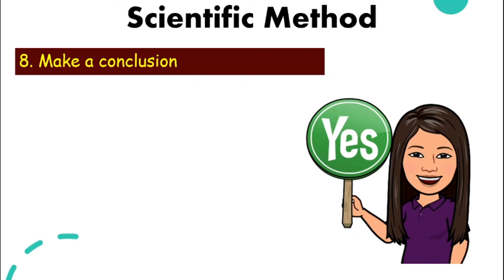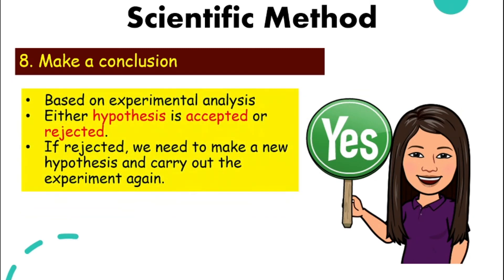And then we make a conclusion. This is where we talk about our hypothesis. Based on our analysis, we will know if the hypothesis is accepted or rejected. The little boy's hypothesis earlier saying that the cloth towel will absorb water more quickly compared to tissue paper is accepted. We proved it through the experiment. Just in case the hypothesis is rejected, then we need to make a new hypothesis and carry out the experiment again to prove it.